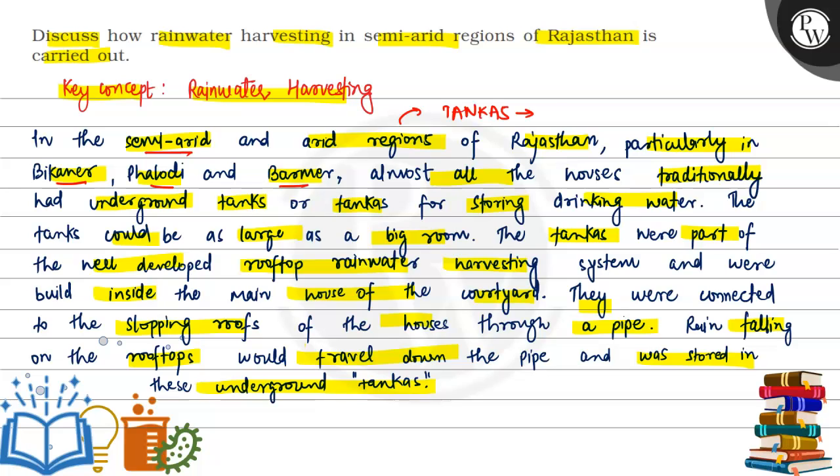These tanks are combined within the main house and are used to store water for use during the dry season.